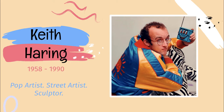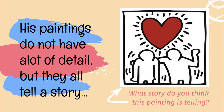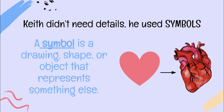Keith Haring was considered a pop artist, a street artist, and a sculptor. As we have learned in our extensive research, his pop art used very simplistic human figures and animals. He also often utilized his paintings to tell a story or to show something that was going on — something I'm always telling you to do with your work.